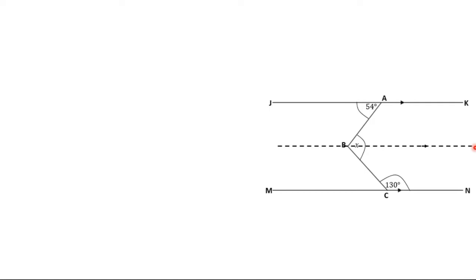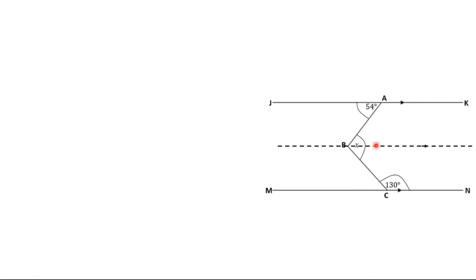Once you bring in this imaginary parallel line, it looks similar to what we saw in the previous video. Before the auxiliary line was introduced, the whole angle was X. By bringing in this parallel line, we divide X into two parts. We call the first part A and the second part B. So if we find A and B and add them together, we get X.